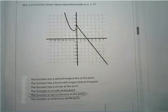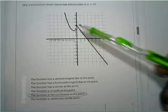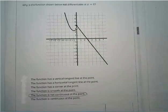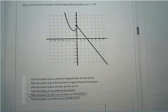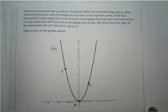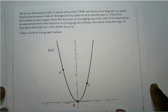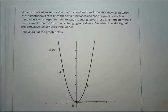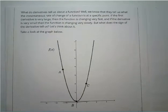Why is this function not differentiable at x equals 0? You can see it's a piecewise function — it starts at one piece and picks up at another. It's not continuous at x equals 0. It's not a vertical tangent, not a sharp corner; it actually separates. The discontinuity at x equals 0 is why it's not differentiable there.